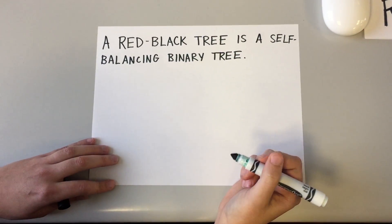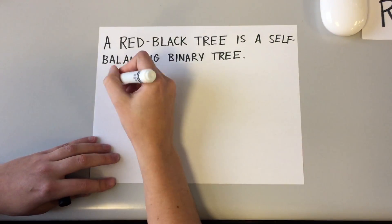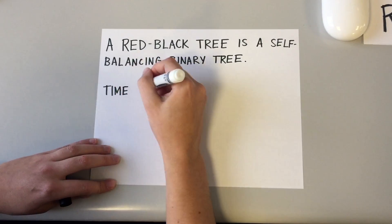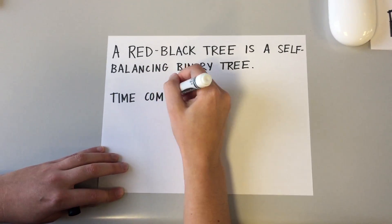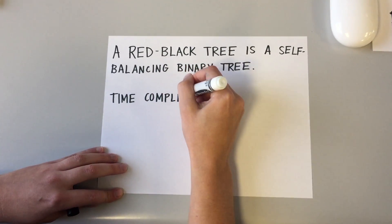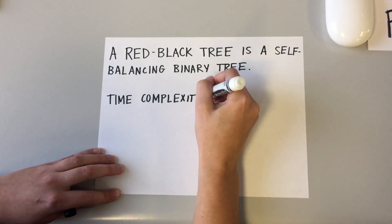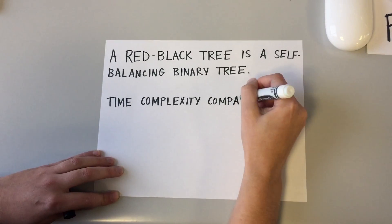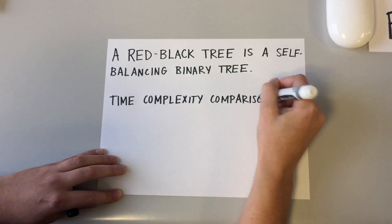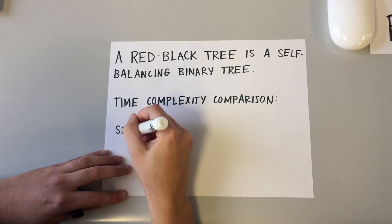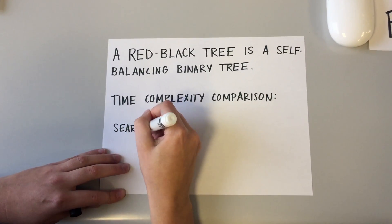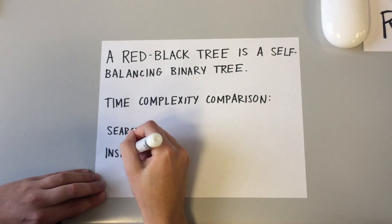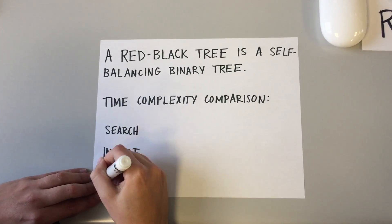A Red-Black Tree is a kind of self-balancing binary search tree. Each node of the binary tree has an extra bit, and that bit is often interpreted as the color — red or black — of the node. These color bits are used to ensure the tree remains approximately balanced during insertions and deletions.